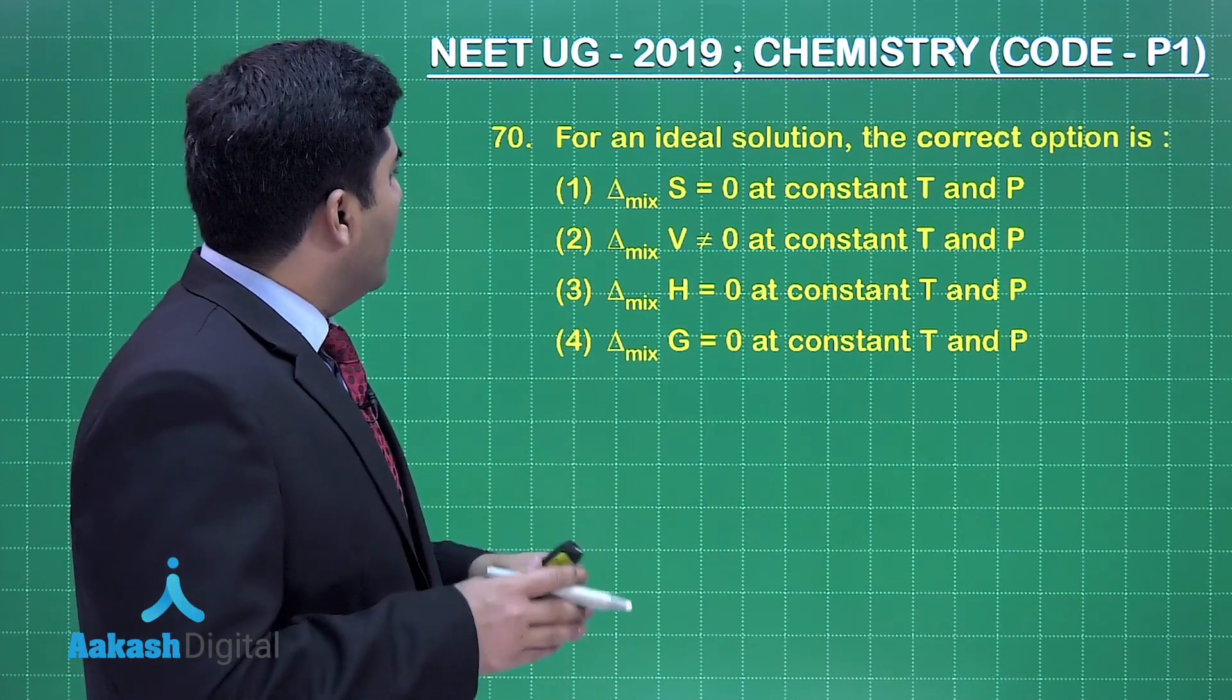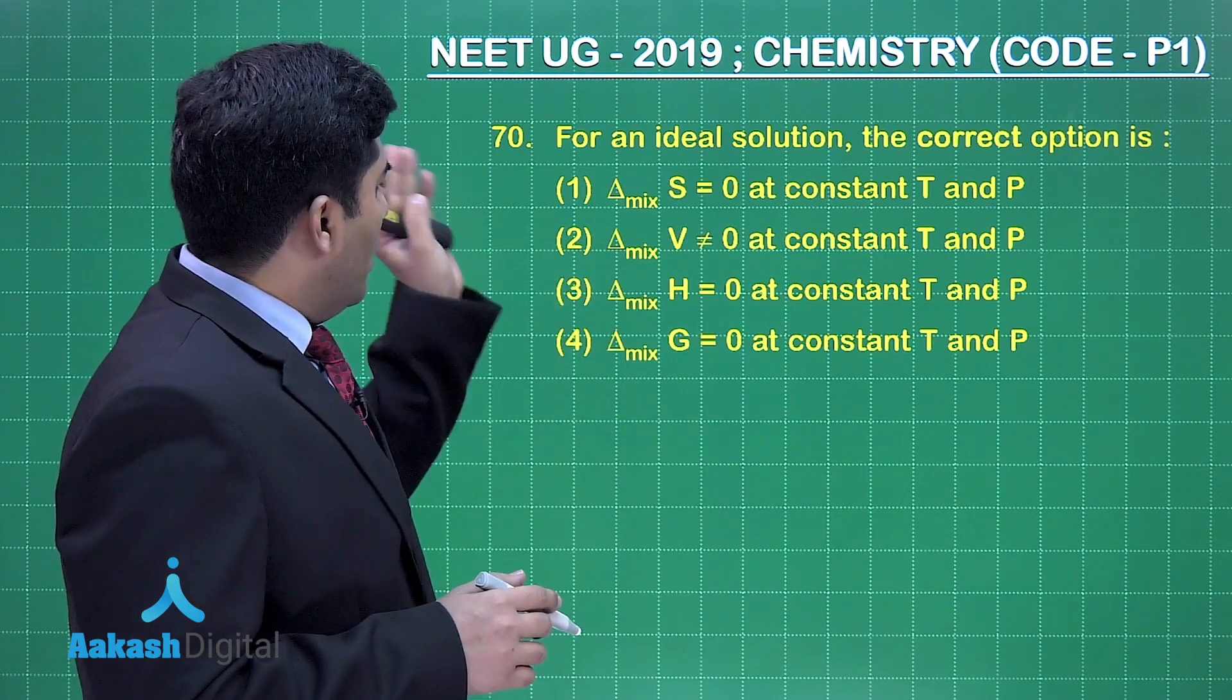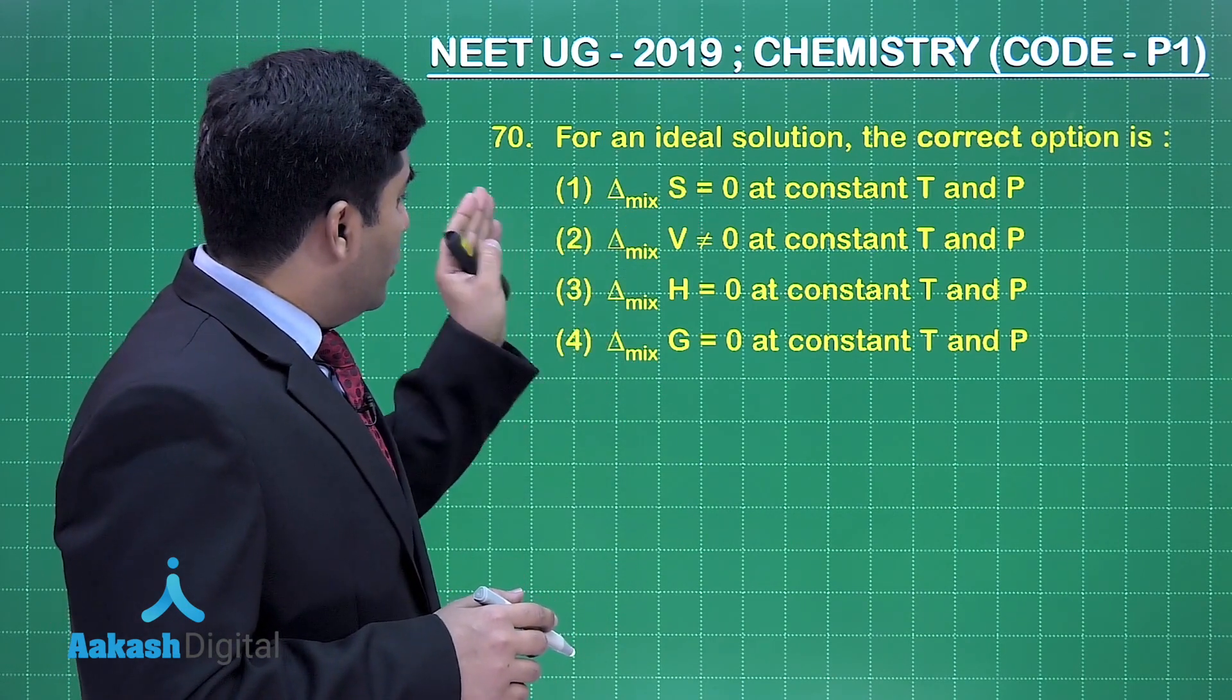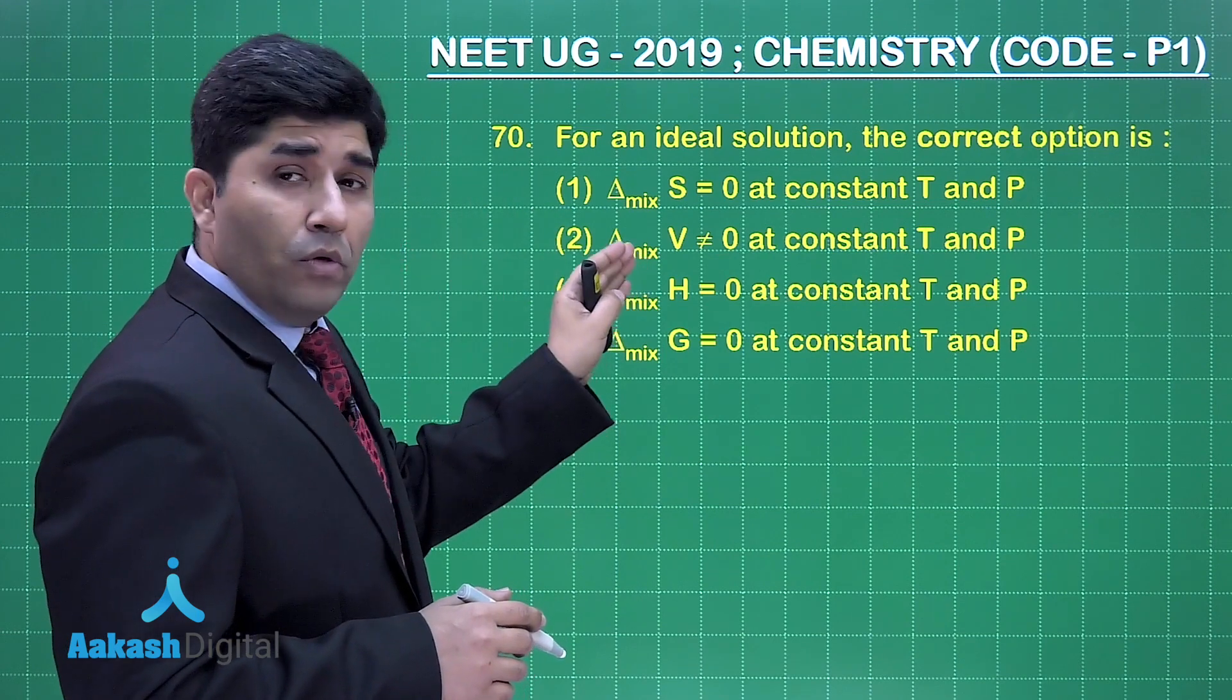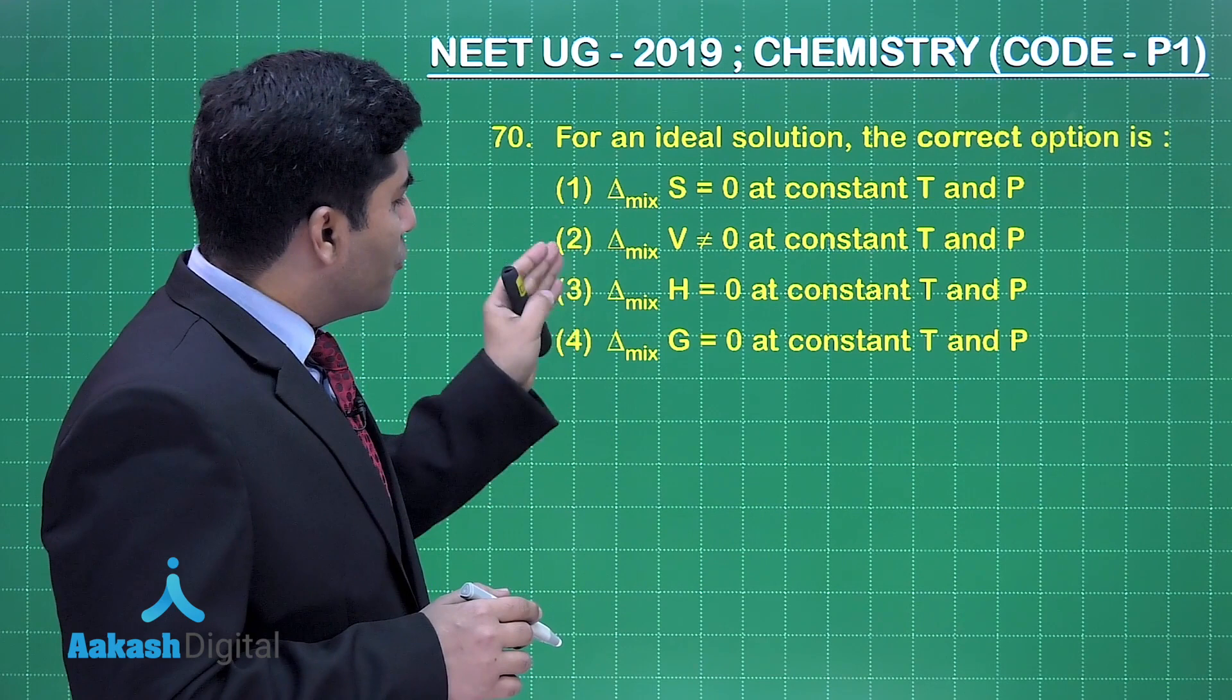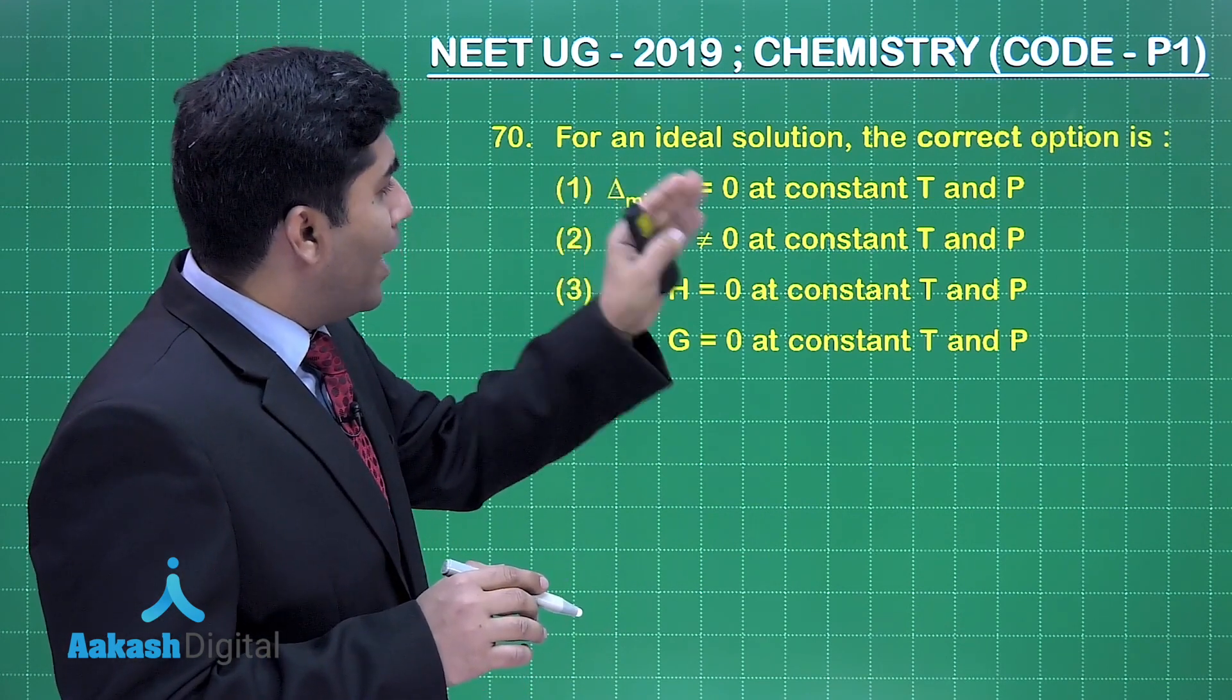Now in this question is asking for an ideal solution, the correct option is: ΔS = 0 at constant T and P, ΔV ≠ 0 at constant T and P, ΔH = 0 at constant T and P, and ΔG = 0 at constant T and P, all are at constant temperature and pressure.